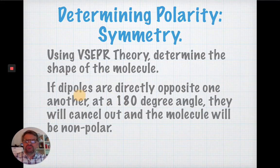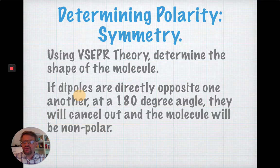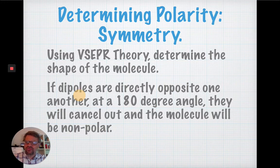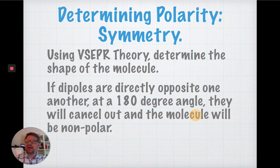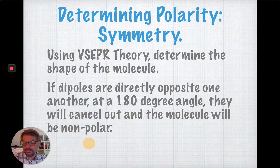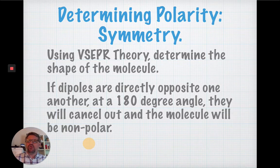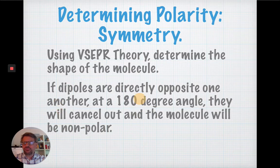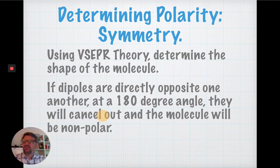And here's what happens. If you have dipoles, if you have polar bonds with that electronegativity difference between 0.5 and 1.7, if the dipoles are directly opposite one another at a 180-degree angle, they end up canceling out, balancing out. And the molecule then behaves in a non-polar way, even if it has polar bonds in it. So, the symmetry of the molecule, if polar bonds are directly opposite of each other, the molecule is non-polar.